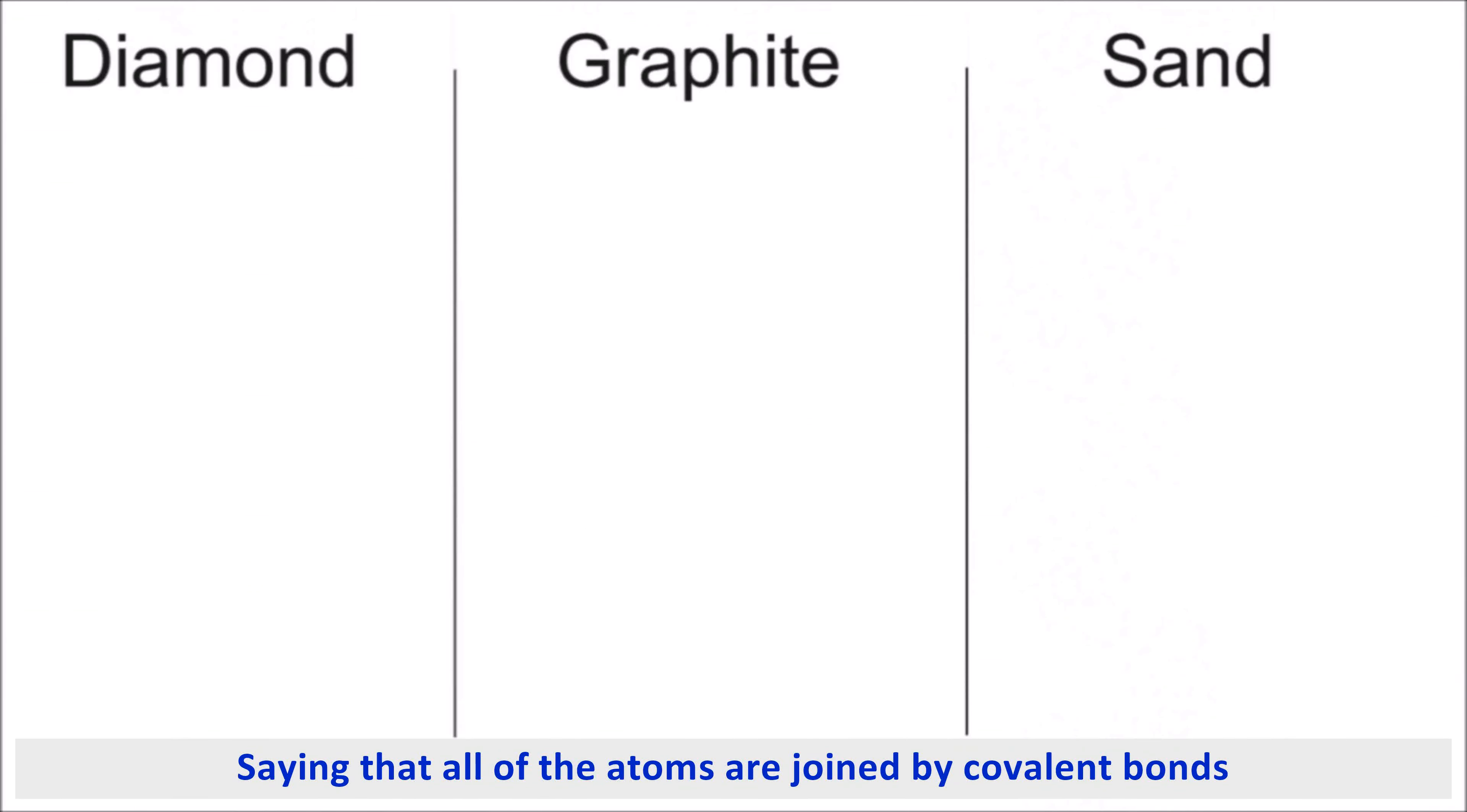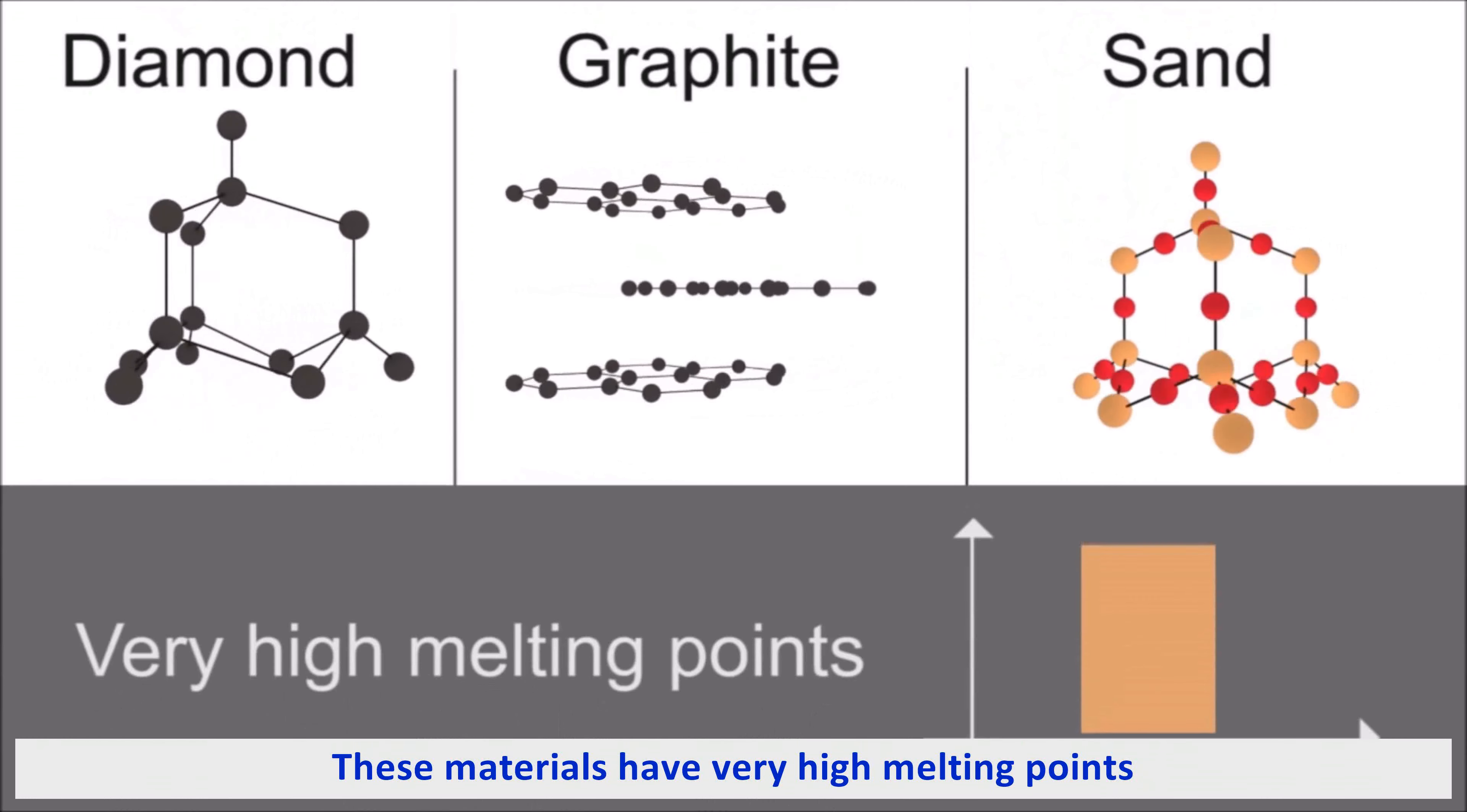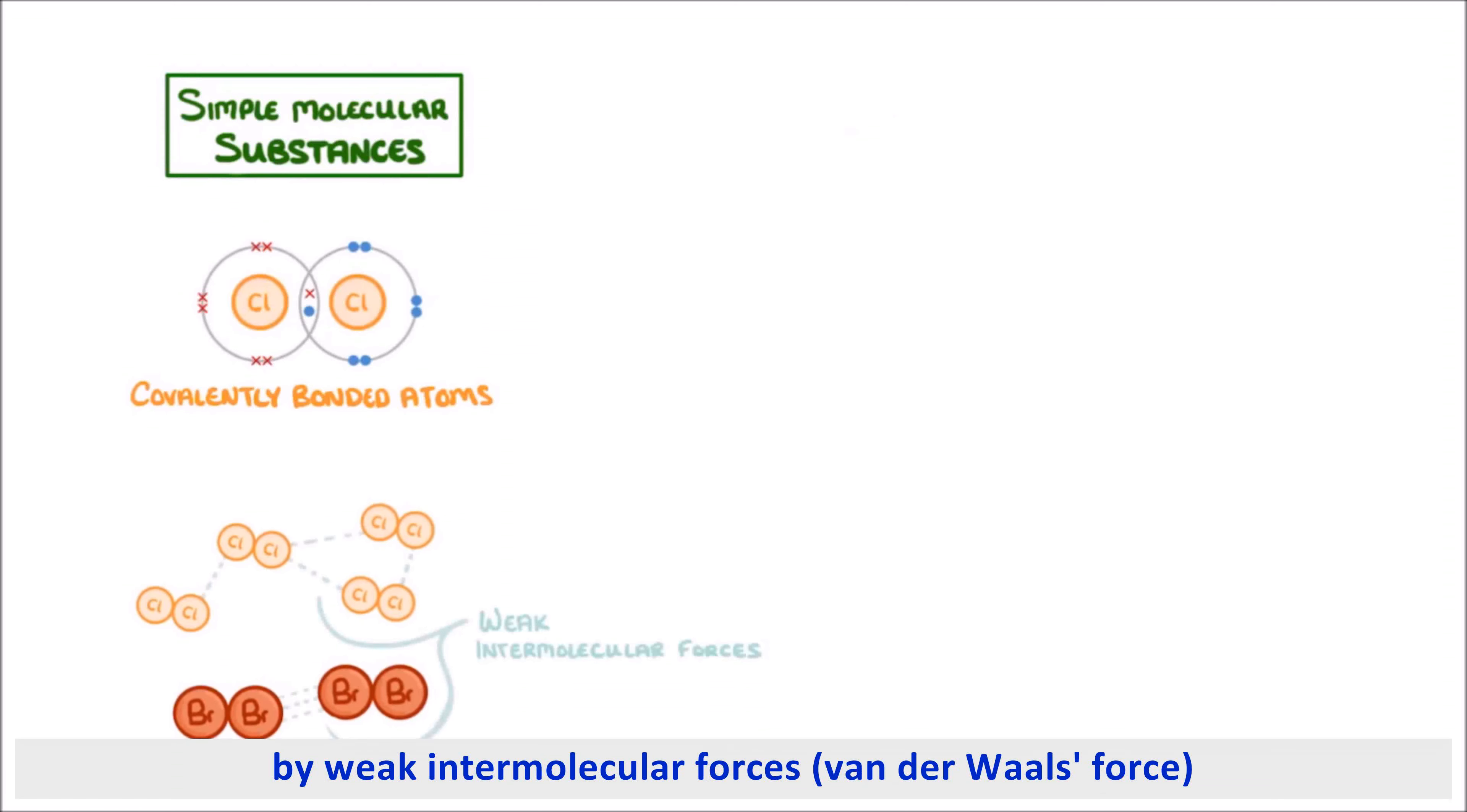Seeing as all of the atoms are joined by covalent bonds, these materials have very high melting points. Now the key thing to take away from this video is that simple molecular substances are small molecules that are made up of just a few covalently bonded atoms, and the separate molecules are only joined together by weak intermolecular forces.